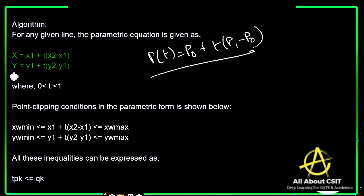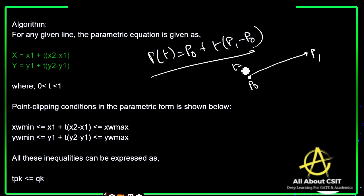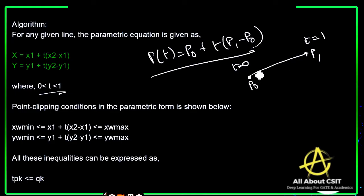If you consider any line: x = x1 + t(x2 - x1) and y = y1 + t(y2 - y1), where t is between 0 and 1. The point P0 starts at t=0 and ends at t=1. The intersection time — the time at which intersection points occur — should always be between 0 and 1.